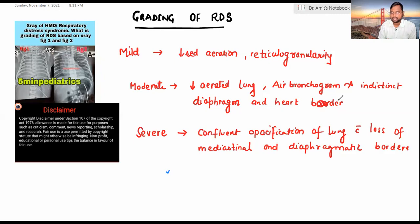We have three gradings: mild, moderate, and severe of respiratory distress syndrome. In mild form, there is decreased aeration, there is under-aerated lung, and there is reticulogranularity.